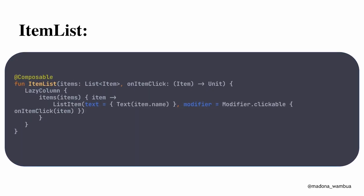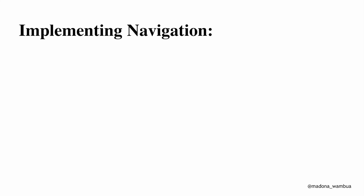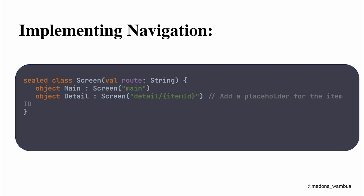The item list is a composable function that uses a LazyColumn, which loads as many items as needed and lets users scroll through them. For navigation, I've done a talk on different ways of navigating in Jetpack Compose — available on my YouTube channel. Here we create a sealed class called Screen. A sealed class is a special kind of class in Kotlin that represents a restricted hierarchy where subclasses are defined within the sealed class itself. We define objects like Main and Details, then navigate to the corresponding screens.